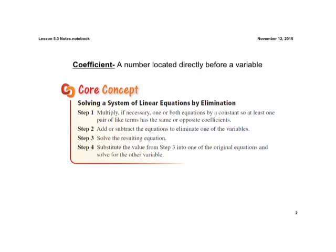A little vocab word: coefficient, which is simply a number located directly before a variable. So if we have something like 3x, this 3 is our coefficient before our variable x.